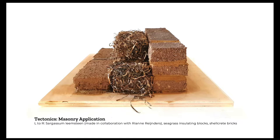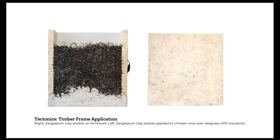A lot of times people tell me seagrass is a fantastic insulator but they prefer an easier install method. So by compressing seagrass with a bit of clay as the binder, I found I could create insulating blocks that are really easy to install. On the outside we have the shellcrete bricks, and this entire model was made with a seaweed clay masonry infill between the bricks, which also allowed me to disassemble the model, move it, and reassemble it at a later point.